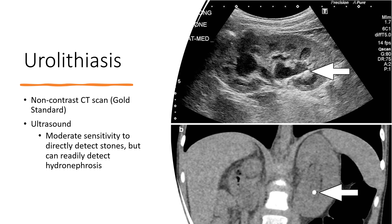However, CT is scrutinized due to its associated increased cost, radiation dose, and frequency of incidental findings. This is particularly a concern considering that patients with urolithiasis have high recurrence rates. When compared to CT scan, ultrasound has only modest accuracy for the direct detection of urinary calculi themselves, but can easily detect the sequelae of an obstructing stone in the form of hydronephrosis.